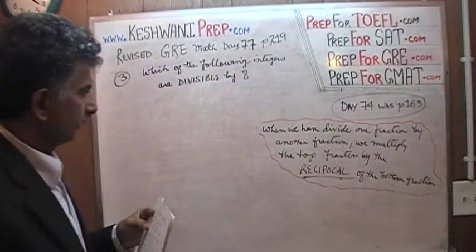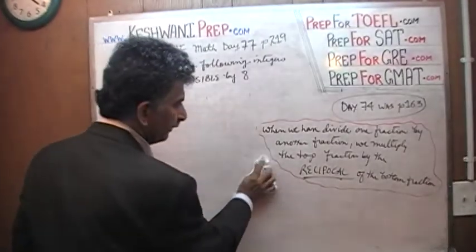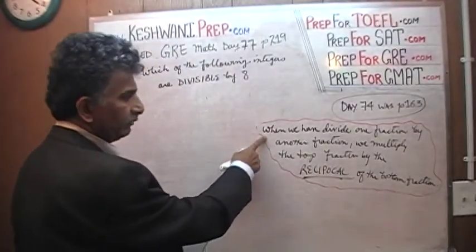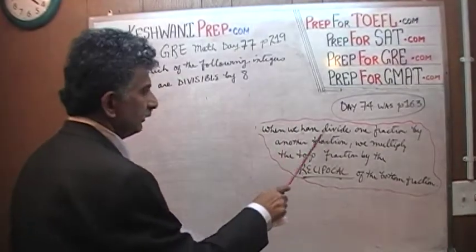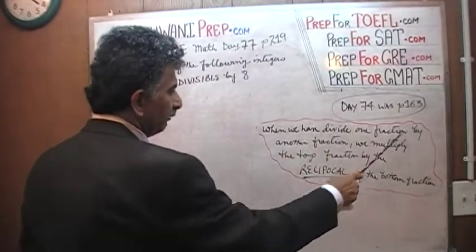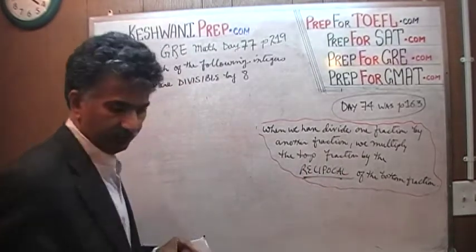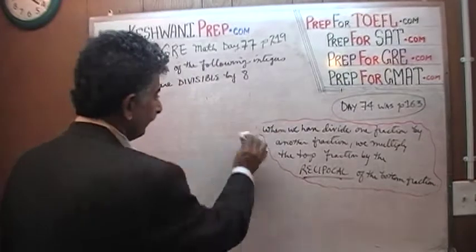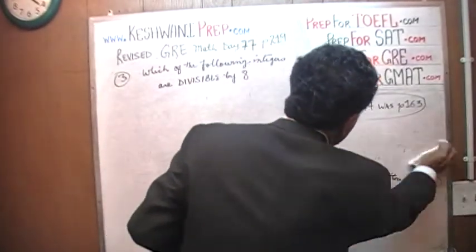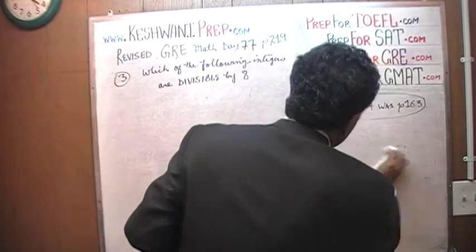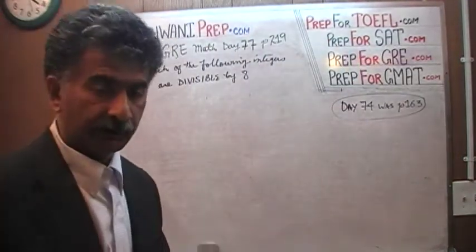Well, let's take a look at it. From yesterday — we no longer need it. It says when we have to divide one fraction by another fraction, we multiply the top fraction by the reciprocal of the bottom fraction. Words of wisdom from the far east.